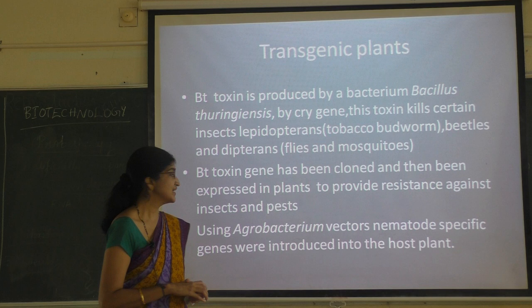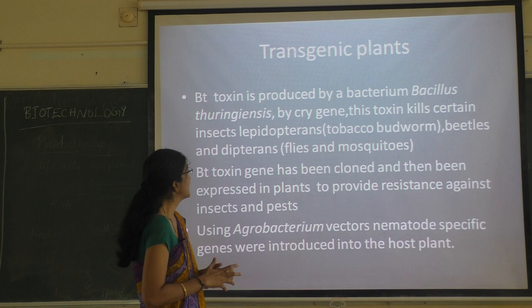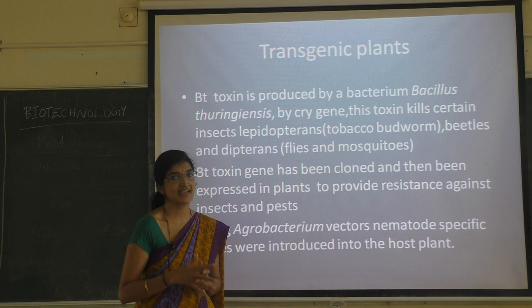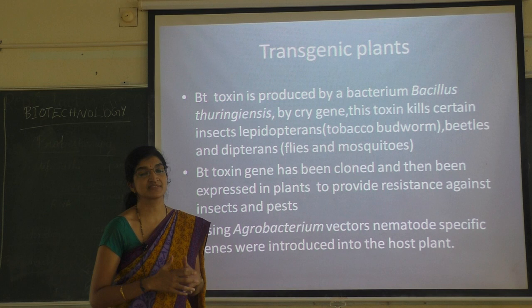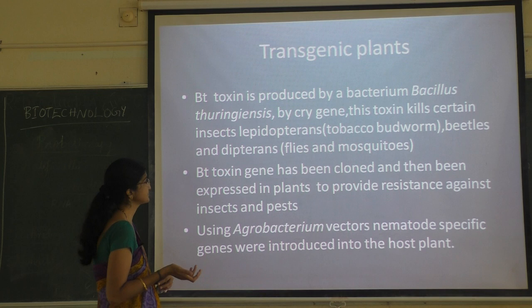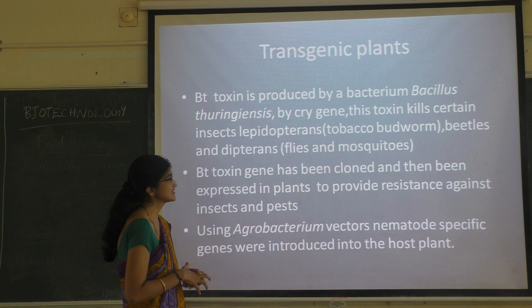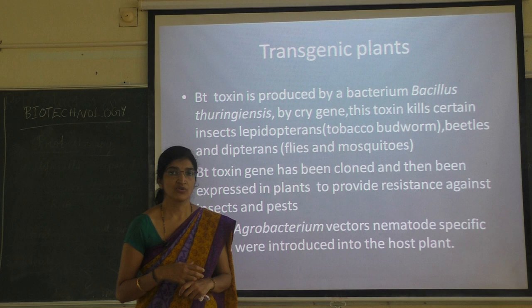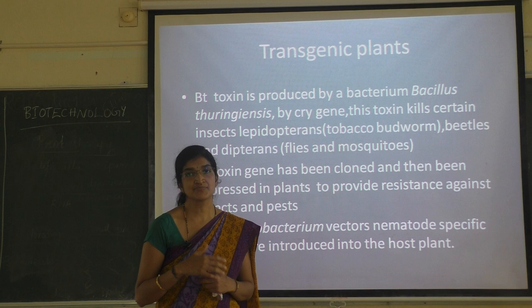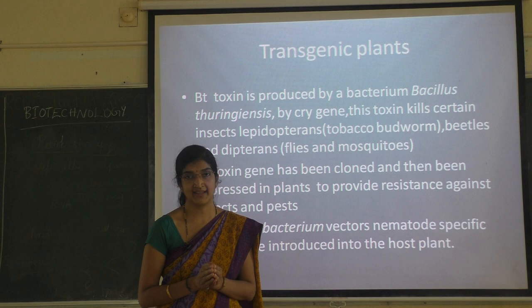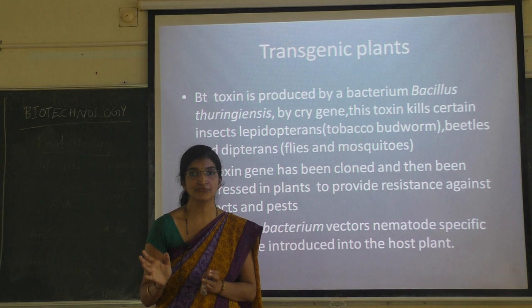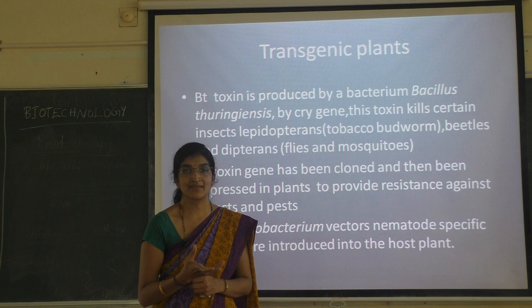One example is Bt toxin, which is produced by the bacterium Bacillus thuringiensis, which contains the cry gene. These cry genes produce specific toxins against specific pathogens, which kill different groups of insects — for example, Lepidopterans, which include tobacco budworms and beetles, and Dipterans, which include flies and mosquitoes. These proteins are toxic to these insects and kill the different groups of insects.